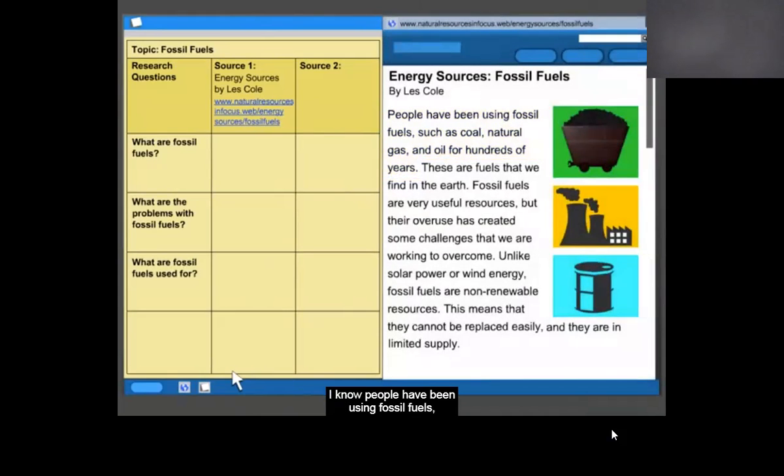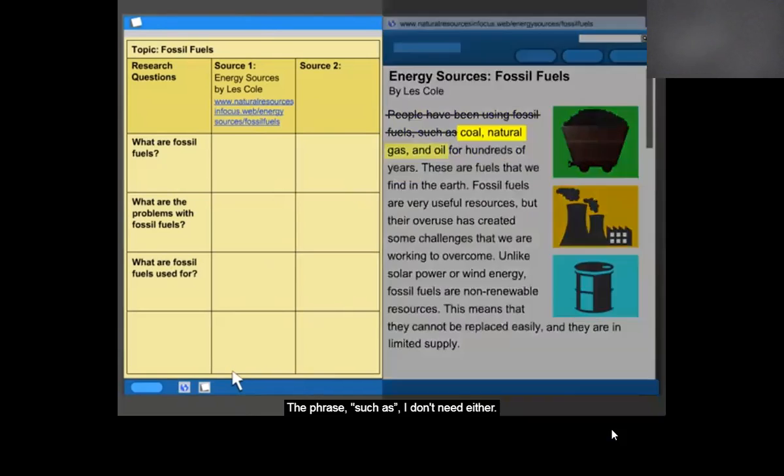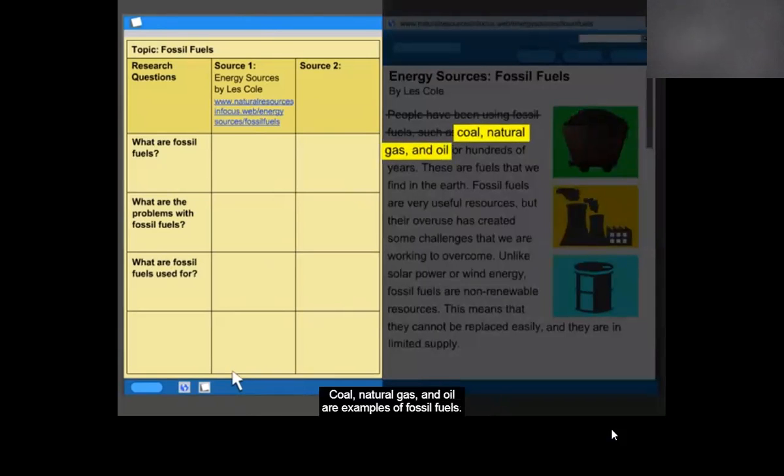I know people have been using fossil fuels, so I don't need the first part of the sentence. The phrase, such as, I don't need either. Coal, natural gas, and oil are examples of fossil fuels.